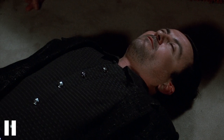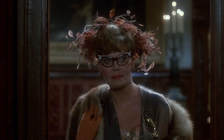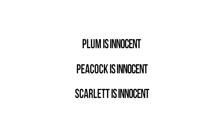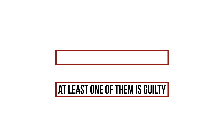Again, we have three suspects: Professor Plum, Miss Scarlet, and Mrs. Peacock. We want to find out whether Plum is innocent, whether Peacock is innocent, and whether Scarlet is innocent. These statements are atomic propositions represented by the propositional letters p, c, and s. At least one of them is guilty — this is our first premise. We translate this into propositional logic: either Plum is guilty, or Peacock is guilty, or Scarlet is guilty. To make this a well-formed formula, we add brackets.